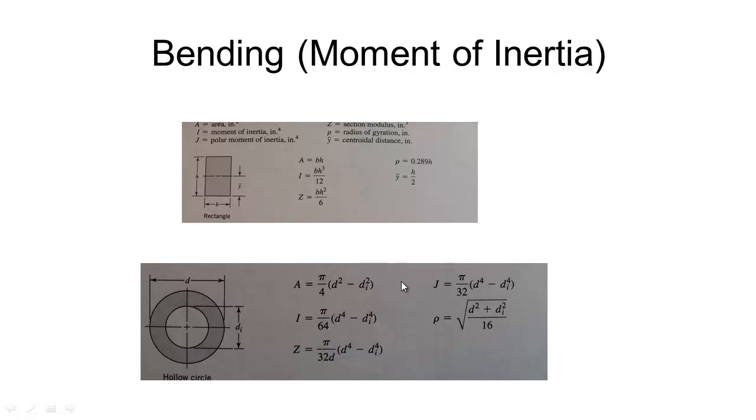Just another thing to note on this page here is this term here which we're going to be needing when we come to buckling. So this is the radius of gyration of the section. So that's just something to keep in mind when we get to buckling in a couple of slides time. Other term to keep in mind is this term J, the polar moment of inertia. This is used in our next slide where we look at torsional stresses.